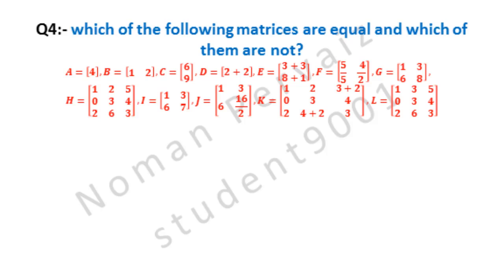Matrix A is 4. Matrix B is 1 and 2. Matrix C is 6 and 9. Matrix D is 2 plus 2. Matrix E is 3 plus 3 and 8 plus 1. Matrix F is 5 by 5 and 4 by 2.